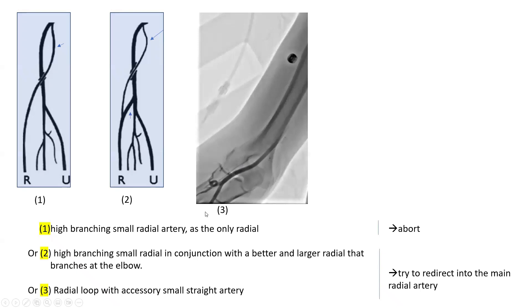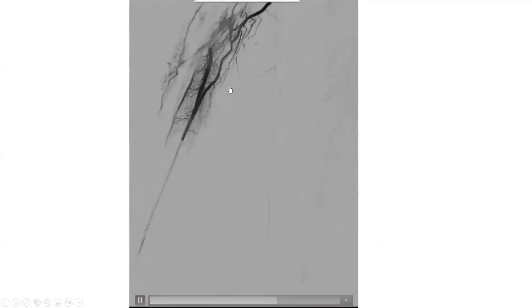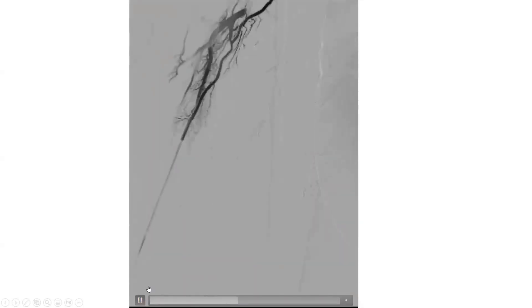In options two and three, you need to redirect your gear to the main radial. That is more difficult in situation three, when there is a loop that gets you into the main radial and the gear wants to go into the easier small radial coming off the apex of the loop. In those cases, you perform a non-selective angiogram, mainly under subtraction. In this patient, what you can see is the following.